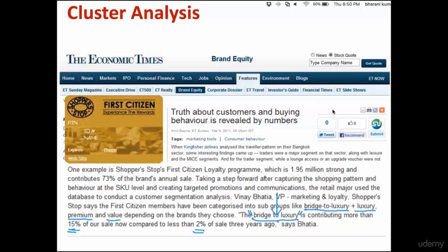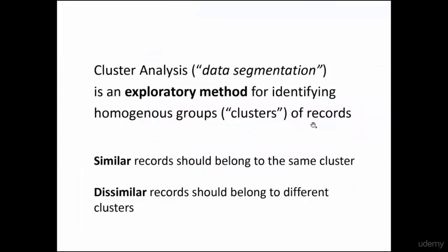Clustering is a term from a statistics perspective. Segmentation is the term for the same thing from a marketing perspective. Clustering is all about data segmentation — it is an exploratory method. The objective is to identify homogeneous groups, meaning groups which are very similar to each other. People, products, or services which are similar to each other are grouped together.